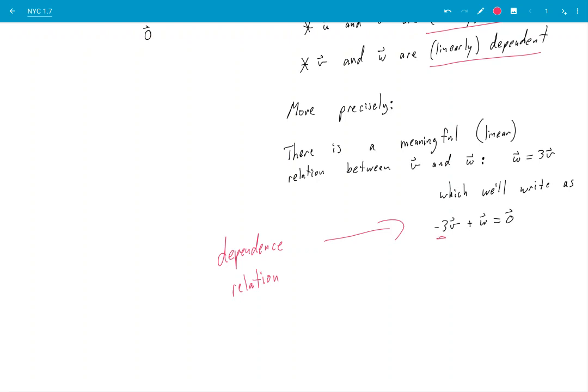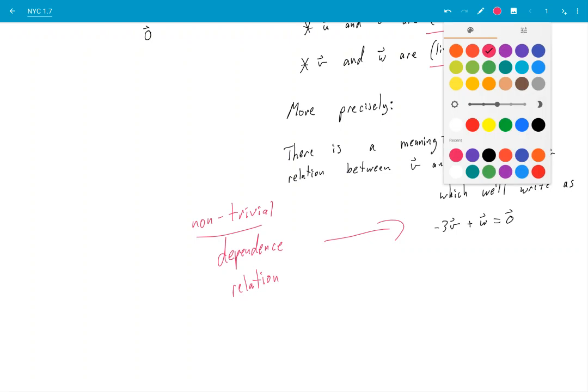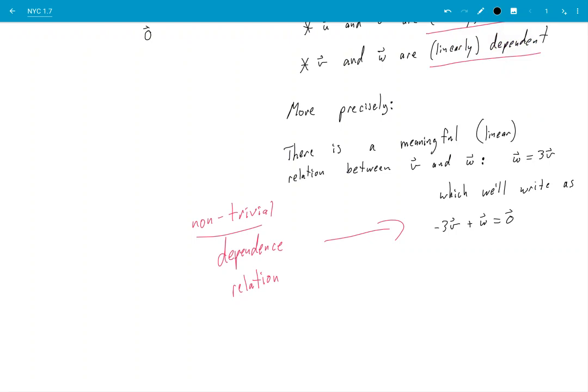We have a -3 here and we have a 1 in front of w. So because those numbers, this one and this one, aren't both zero, we say this is a non-trivial dependence relation. So that is the definition we'll take for vectors to be dependent: that there exists a non-trivial dependence relation between them.